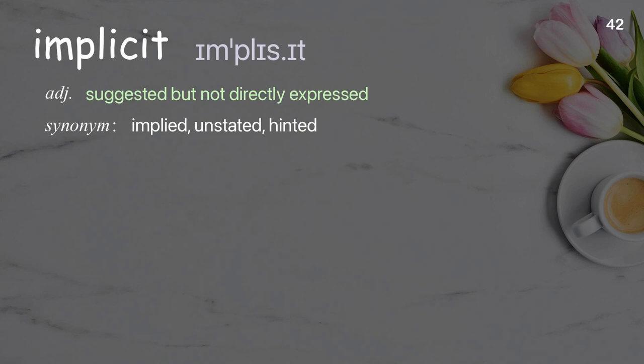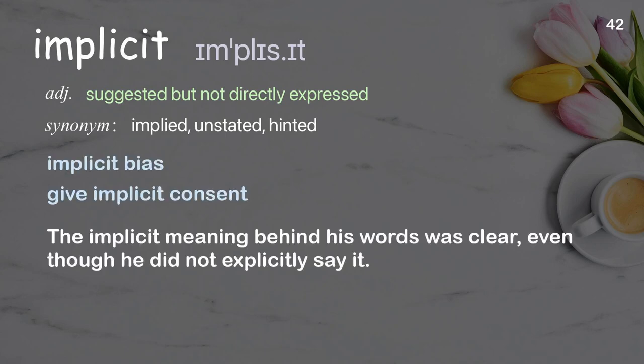Implicit. Suggested but not directly expressed. Examples: implicit bias, give implicit consent. The implicit meaning behind his words was clear, even though he did not explicitly say it.